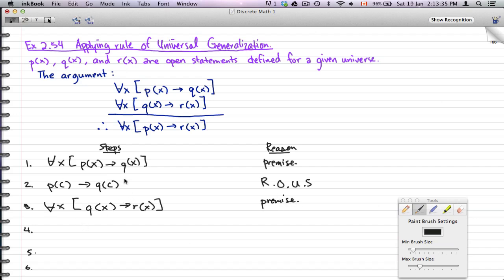And again, we're going to use our rule of universal specification for step four. So we have q(c) → r(c).